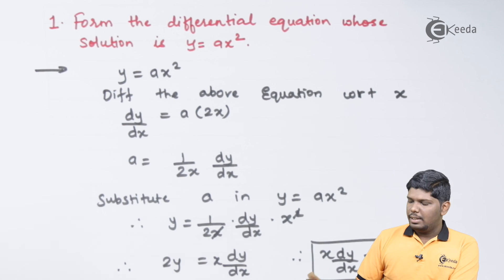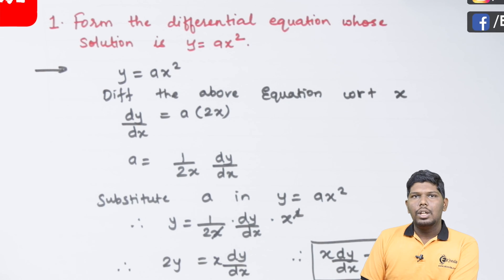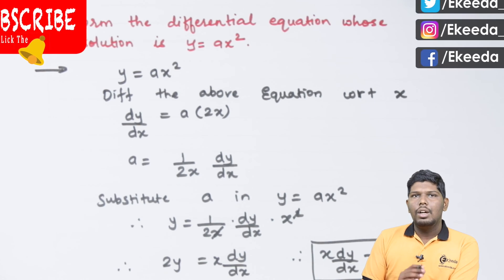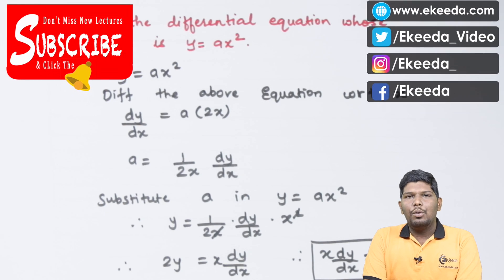So its standard form can be written as x dy/dx, that is a first order derivative, followed by -2y = 0. So this is the differential equation for the given equation. I hope friends you have understood this problem.